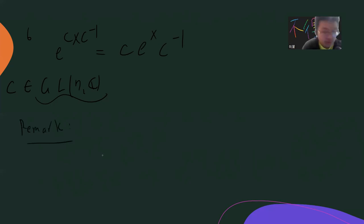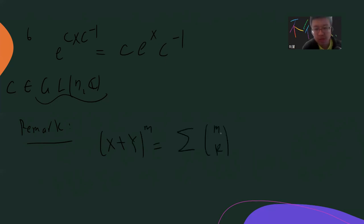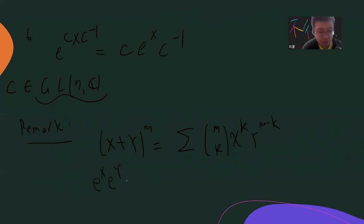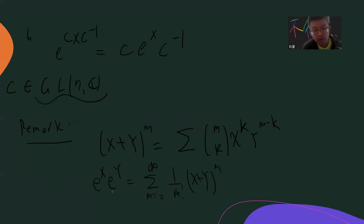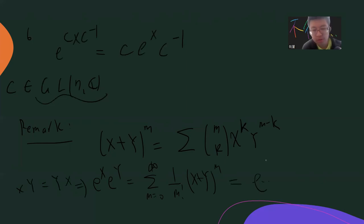A remark: if XY = YX, then (X+Y)^m expands via the binomial theorem as the sum of (m choose k) X^k Y^(m-k). So exp(X+Y) = sum 1/m! (X+Y)^m, and because X and Y commute you can rearrange to get exp(X)·exp(Y). That's why the commutativity condition is essential.